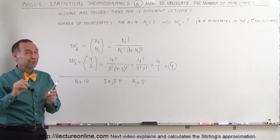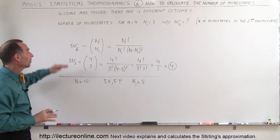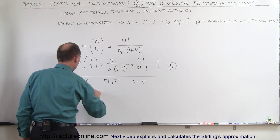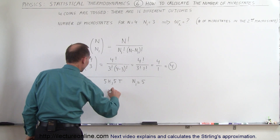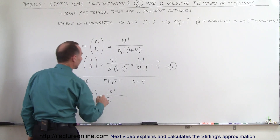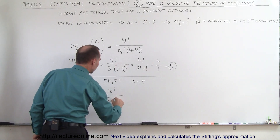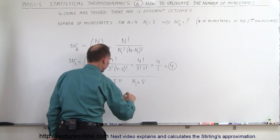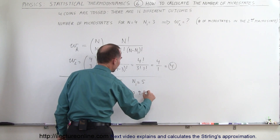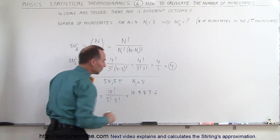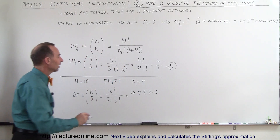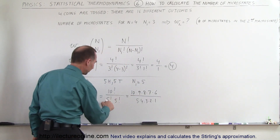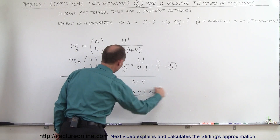Without this equation you'd be sitting there for a long time with pen and paper. But this equation makes it straightforward. We're going to find omega(10, 5), which equals 10 factorial divided by 5 factorial times 5 factorial. That gives us 10 times 9 times 8 times 7 times 6 in the numerator — since 5 factorial cancels — divided by 5 times 4 times 3 times 2 times 1.